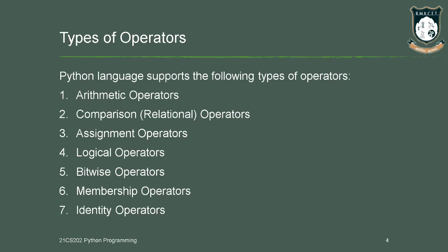The second type is comparison operator, also called relational operator. Third is assignment operator. Fourth is logical operator. Fifth is bitwise operator. Sixth is membership operator. And finally the seventh is identity operator.